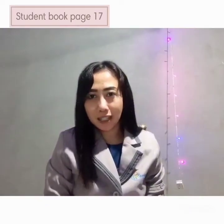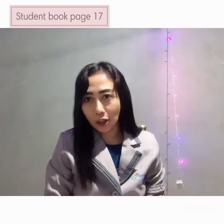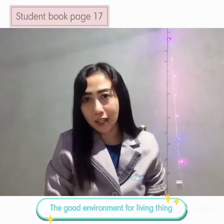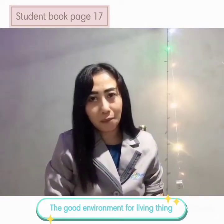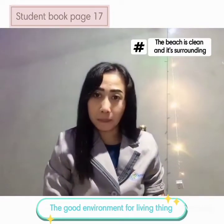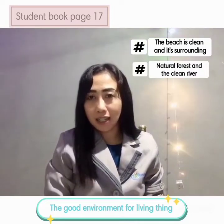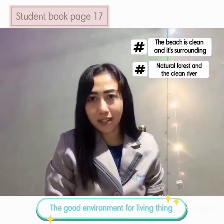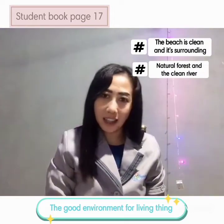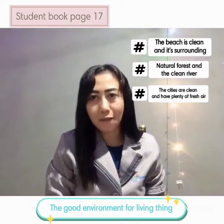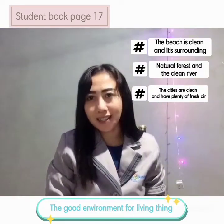Let's continue to page 17. In page 17, we talk about the good environments for living. For example, a clean beach and its surrounding, natural forests, clean rivers, and cities that are clean and have plenty of fresh air.